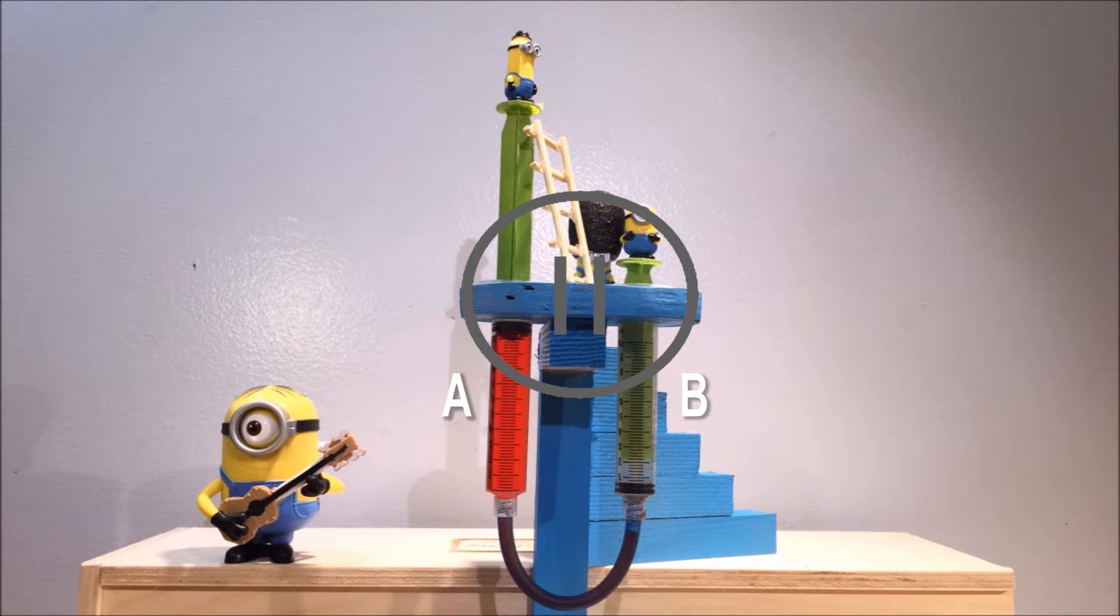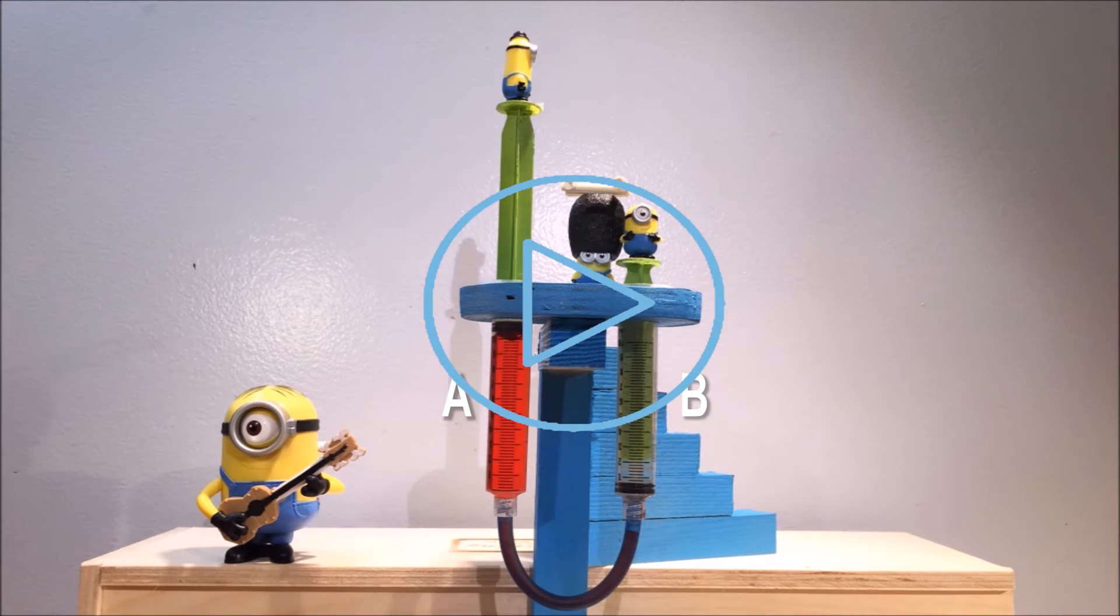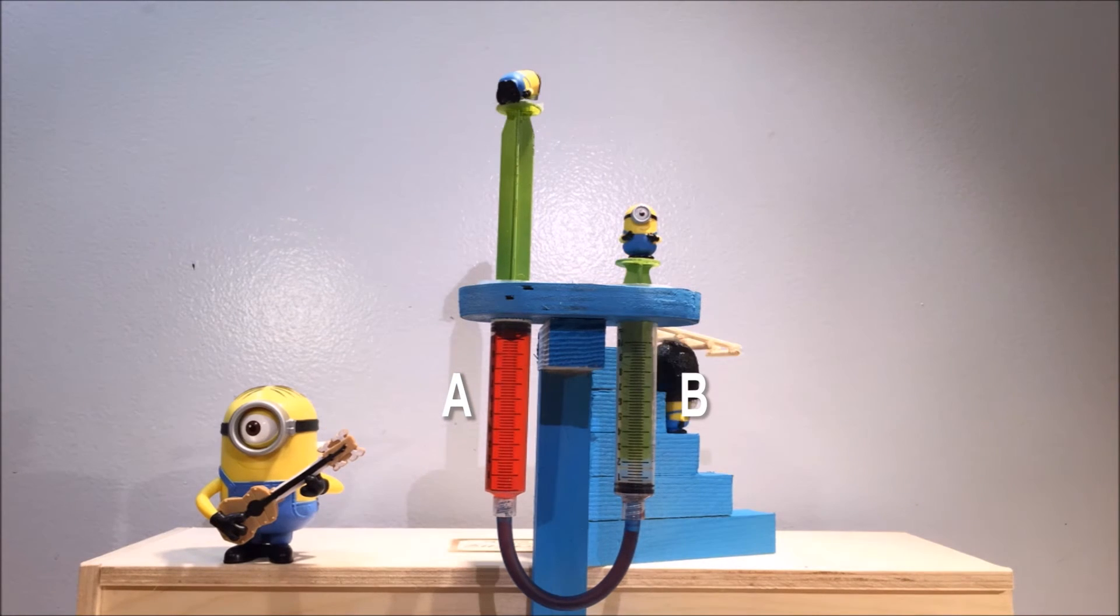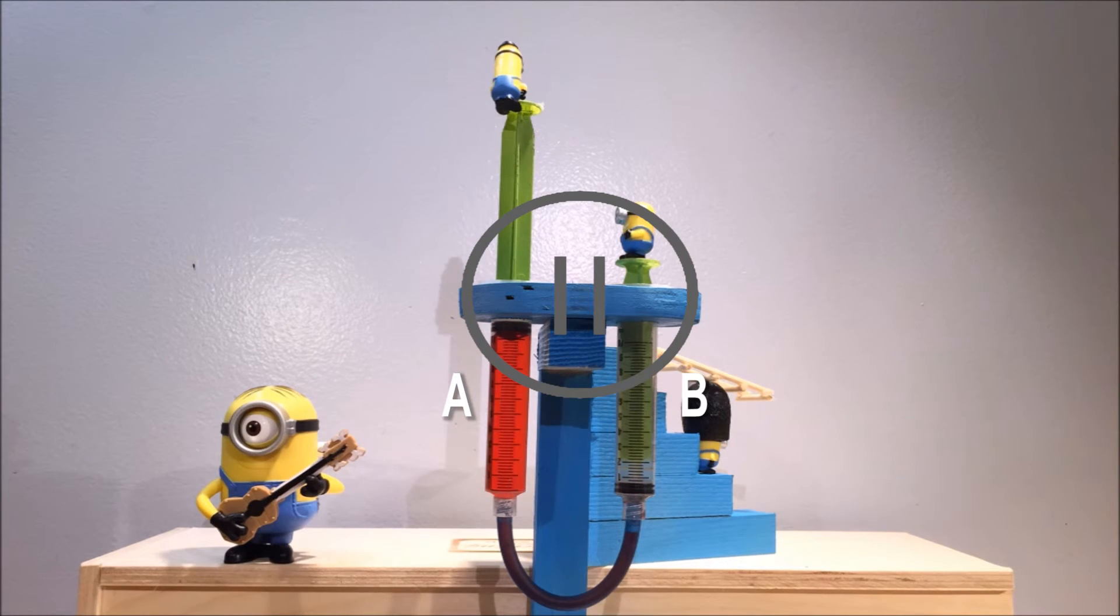Now Bob has jumped off. Is anything going to move? No, that's right, because the pistons are balanced again. But that's a problem for Kevin, because Piston A is all the way up and he is stuck there. How could Stewart help get Kevin down?